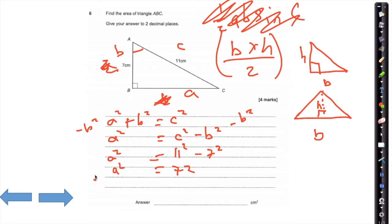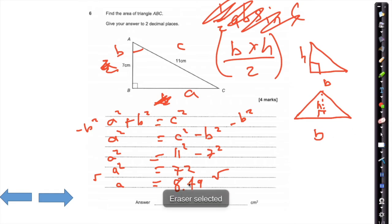Now we square root both sides to get A. Square root of 72 gives us roughly 8.49. However, if you wrote 8.49 and used it in your calculation, you'll actually get a rounding error — your answer would be more like 29.715. So you don't want to do that.